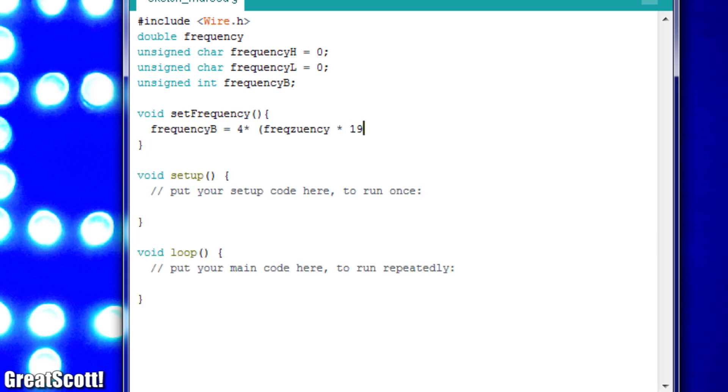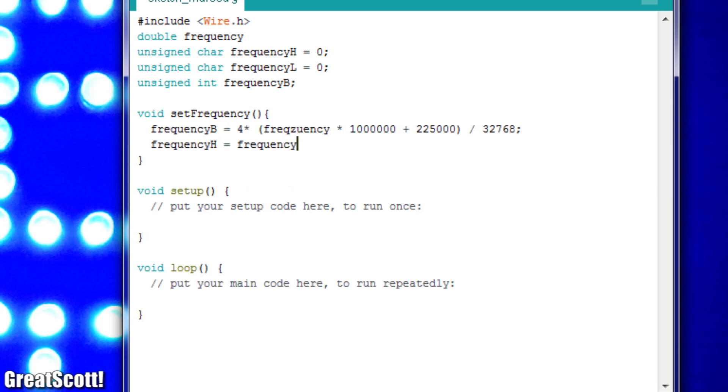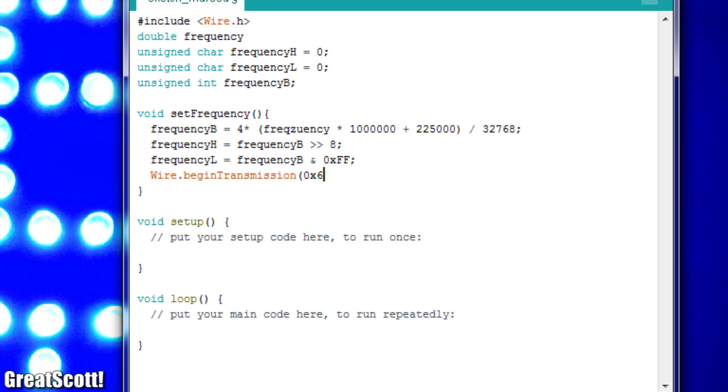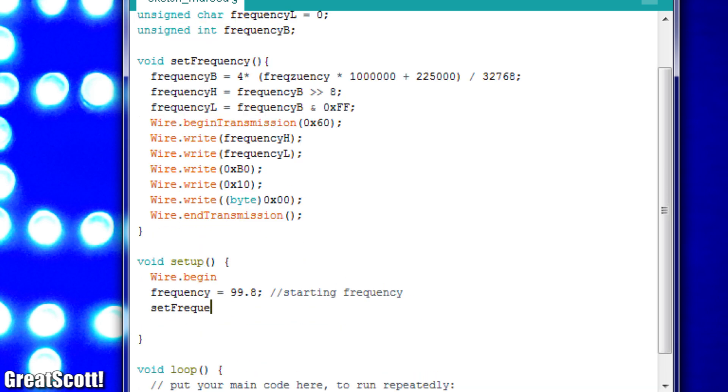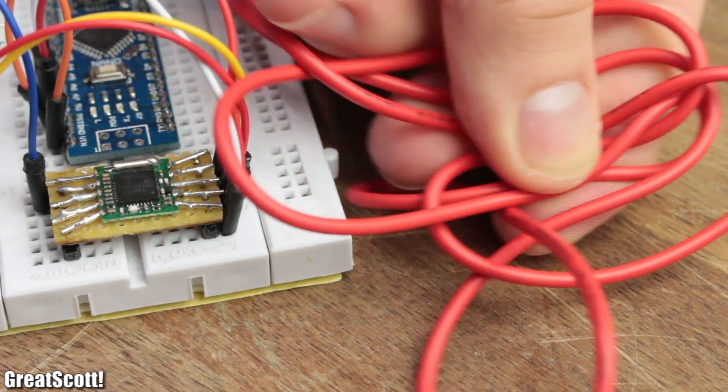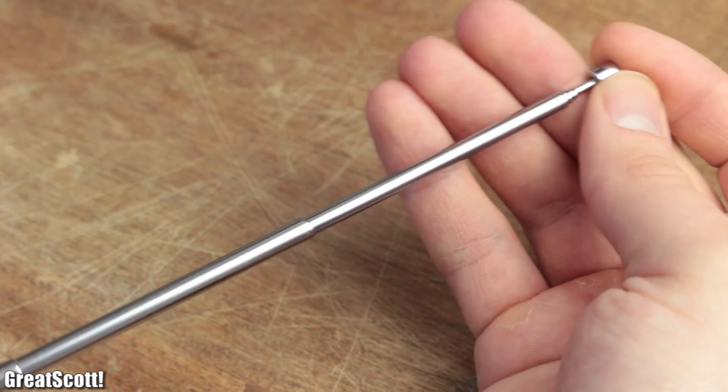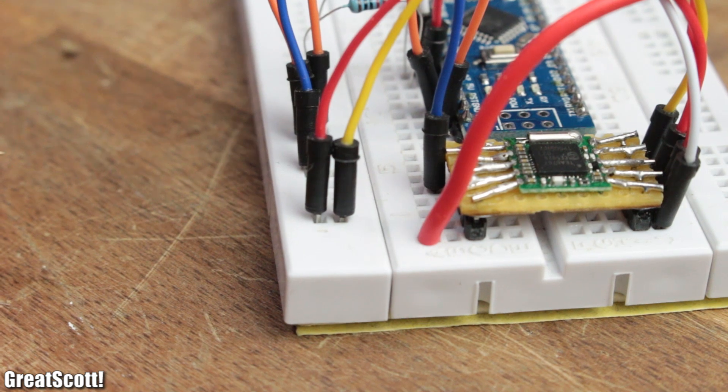Make sure to watch my I2C video if you don't know how to do that or how to connect the IC to the Arduino. The only thing I changed in the code to simplify programming later on was adding a function that converts the frequency value into the hexadecimal values and sending the rest of the necessary bytes as well.